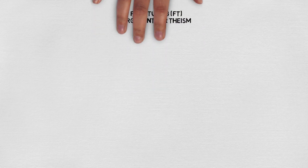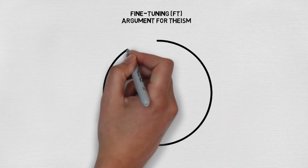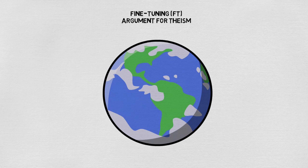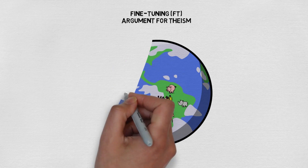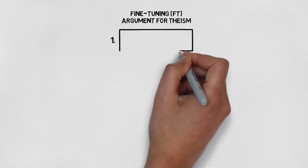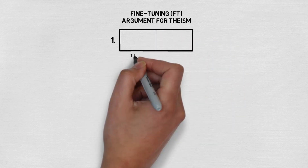In order to show how the Bayesian bar relates to Bayes' theorem we're going to need an example. For this video we're going to use the example of fine tuning arguments for theism, and just as with the previous video I'm not really going to say anything about this type of argument or justify the probability assignments that I give. All you need to know is that our universe has very finely tuned values that allow for life, and that if these values had been different then it's very likely that life wouldn't exist.